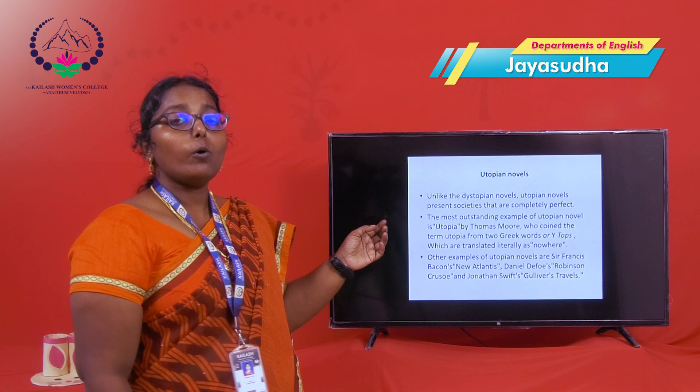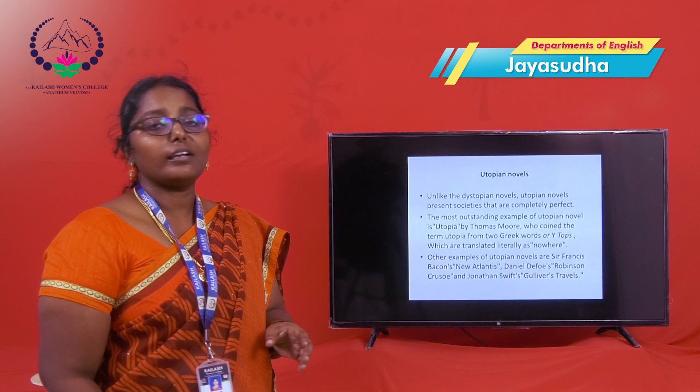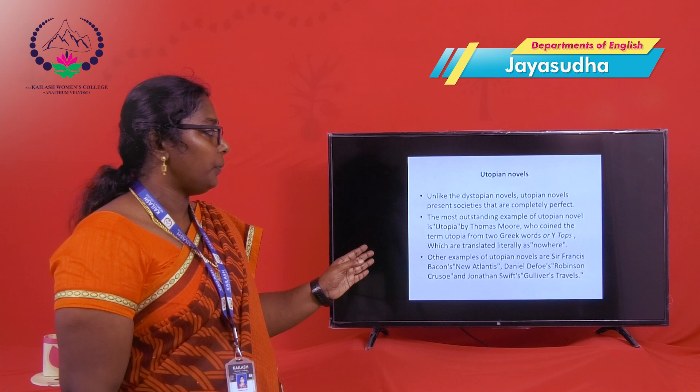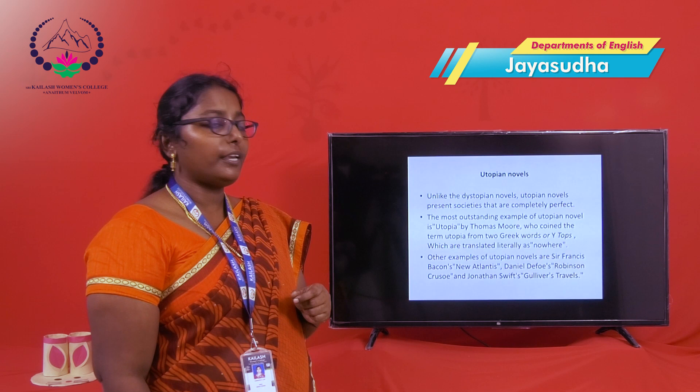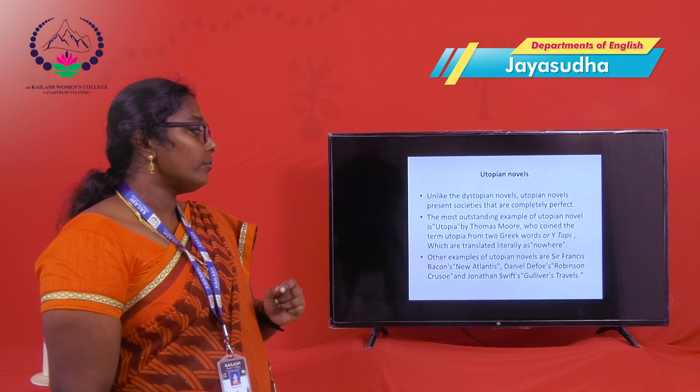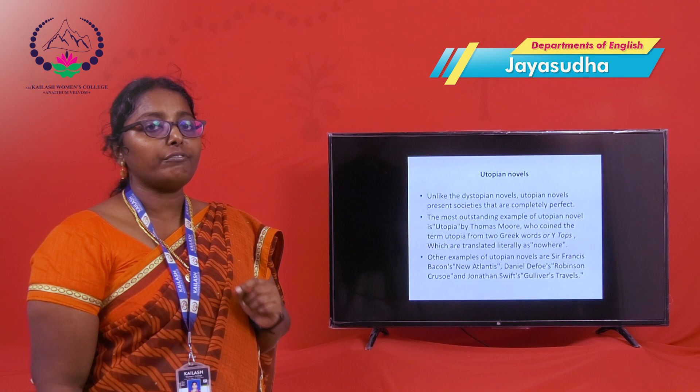Then utopian novels. Unlike dystopian novels, utopian novels present a society that is completely perfect. The most outstanding example of a utopian novel is Utopia by Sir Thomas More, who coined the term 'Utopia' from two Greek words. Other examples of utopian novels are Francis Bacon's New Atlantis, Daniel Defoe's Robinson Crusoe, and Jonathan Swift's Gulliver's Travels.